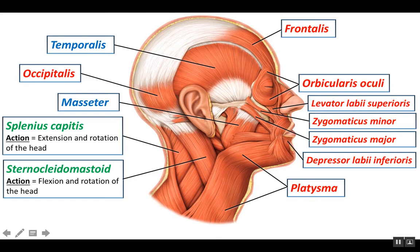Together, they help you rotate the head. Rotation of the head is looking to the right and looking to the left. That motion is actually being done at the atlantoaxial joint — that's the joint between your atlas and your axis, the pivot joint that allows your head to rotate. The muscles that are causing that motion are primarily the splenius capitis and sternocleidomastoid.